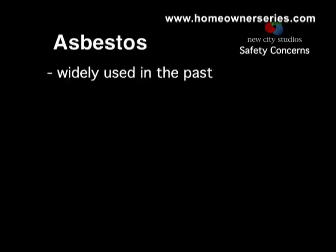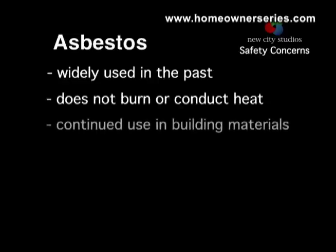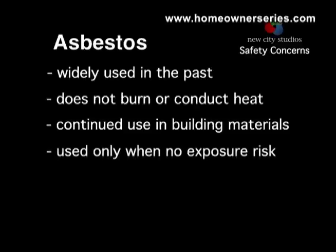Asbestos has been widely used in the past because it has properties that make it commercially valuable. Asbestos does not burn or easily conduct heat and electricity. Manufacturers continue to use it as roof shingles, roof cements, asbestos cement sheets, house siding, and as asbestos cement water pipes. Such products have virtually no exposure risk.